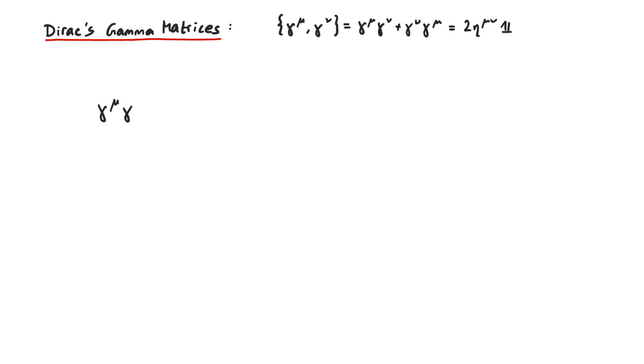How about we calculate gamma mu gamma mu? Since the summation over two indices is implicit, this is actually gamma zero gamma zero plus gamma one gamma one and so on. But using the Clifford algebra, we can do this calculation without expanding the sum.